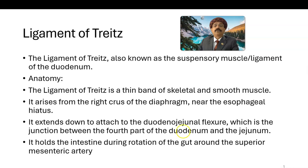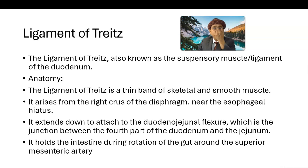This duodenojejunal junction is connected to the posterior abdominal wall and the retroperitoneum through the ligament of Treitz, also known as the suspensory muscle or suspensory ligament of the duodenum.